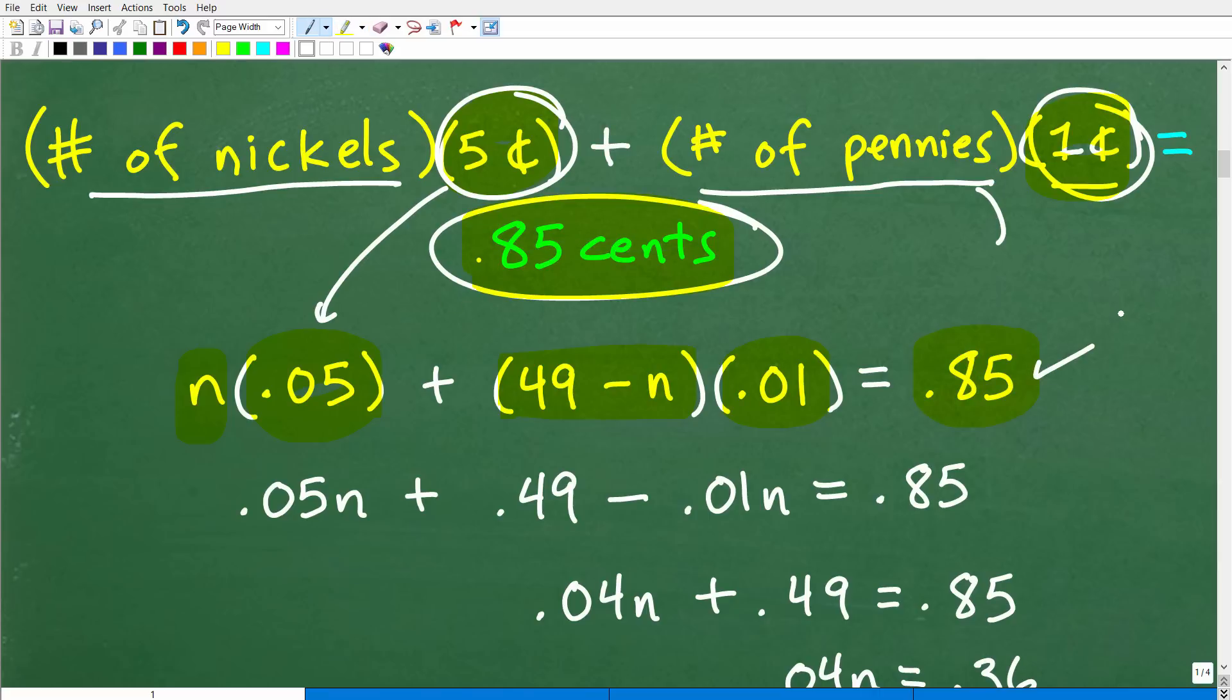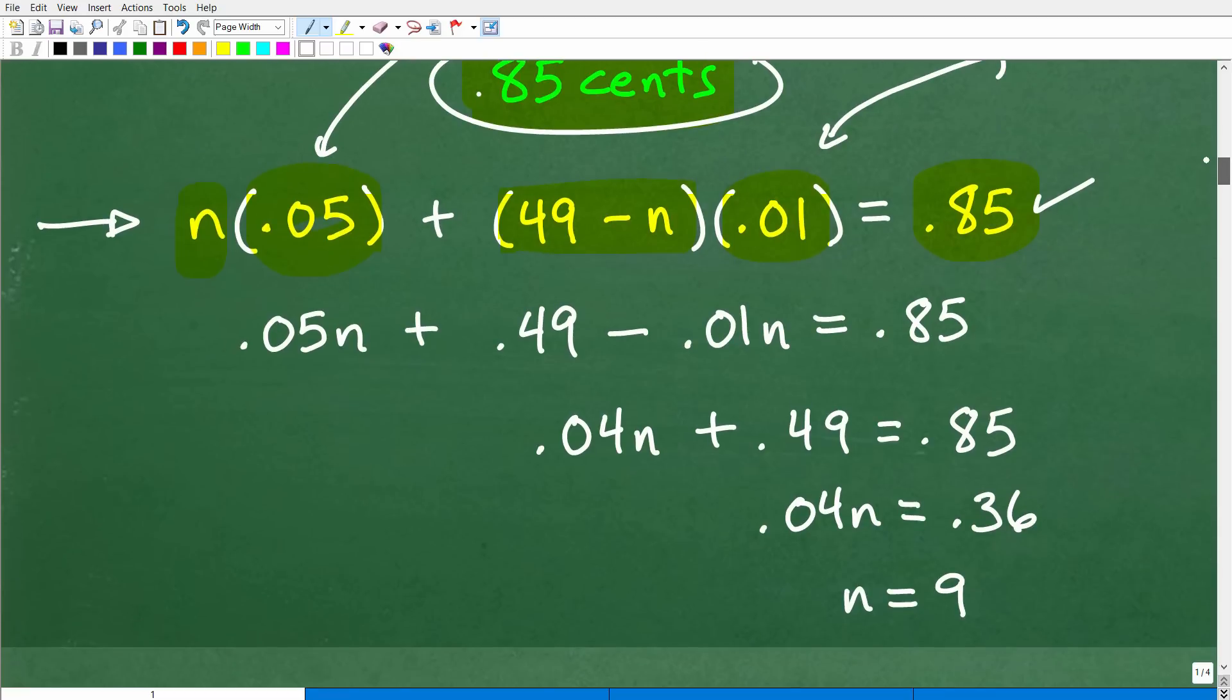So we have 0.05 for our 5 cents plus the number of pennies, remember, is 49 minus N. And then 1 cent is 0.01 as a decimal. And that's going to be equal to 85 cents, which is 0.85. Okay, so if there's one part of this problem that some of you may be confused about, it is converting your cents to decimals. Or again, when you're working with money, think in terms of decimals. Okay, so now we have a lovely equation here. And this point forward, it really comes down to your ability to solve nice linear equations. Let's go ahead and focus in on that part right now.